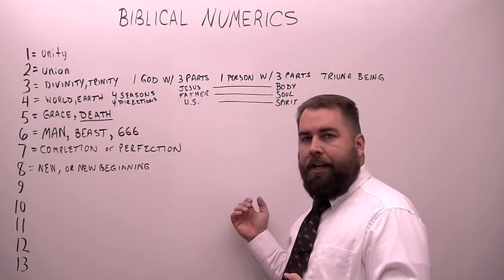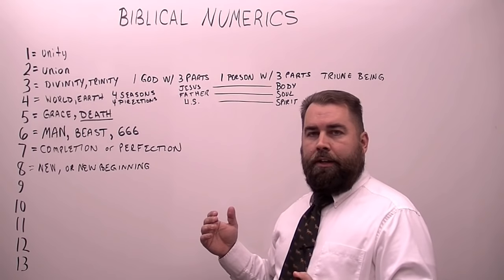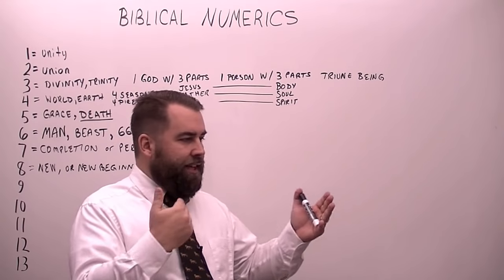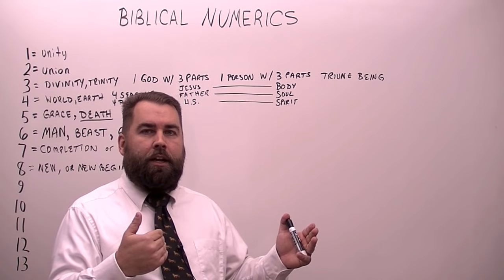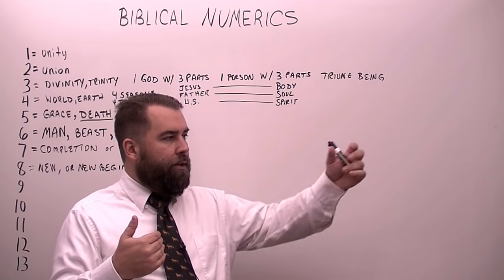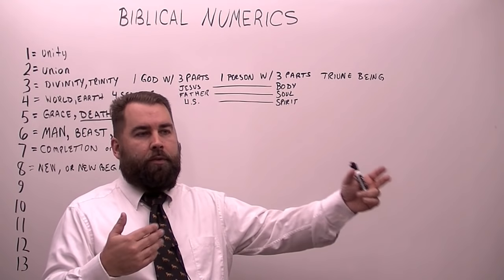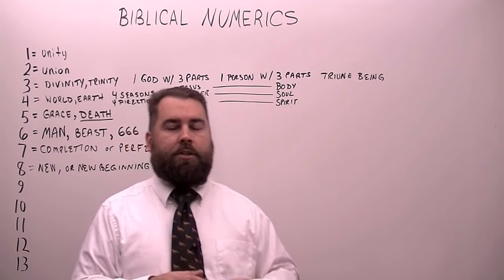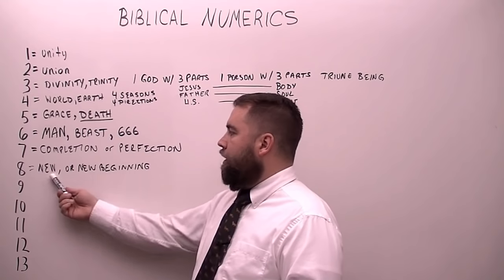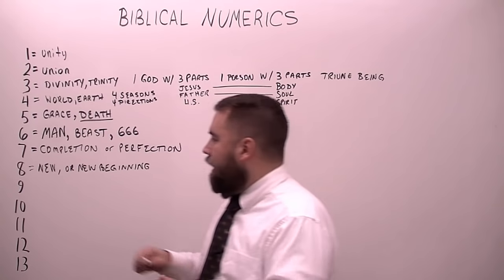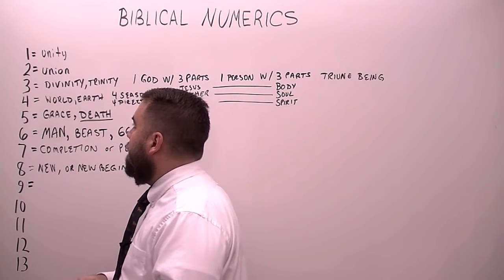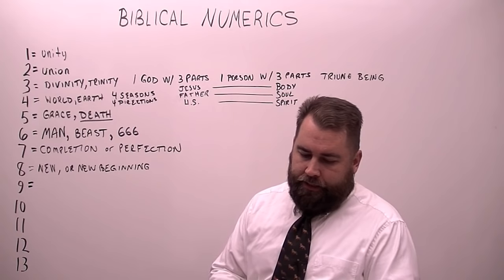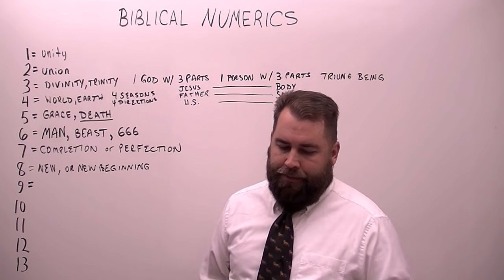You've got 7,000 years of human history, and then the Bible says at the end of Revelation, after the millennium, there will be a new heaven and a new earth. There won't be time anymore, but if there were, that would be the start of the 8,000th year — the new beginning, the new heaven and the new earth. You've got all these numbers that tie into different things, and it's just amazing when you look at Bible numerics how God has set things up so the numbers mean something.